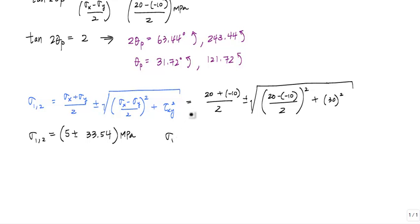Sigma 1 I will call my major principal stress or my most positive, which in this case would be 5 plus 33.54 or 38.54 megapascals. And sigma 2 would be my minor principal stress, 5 minus 33.54 or negative 28.54 megapascals.